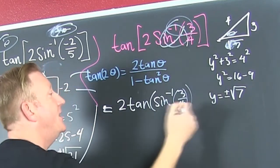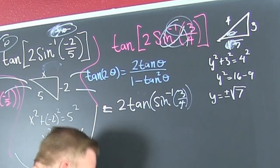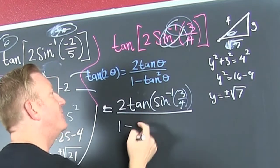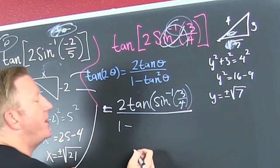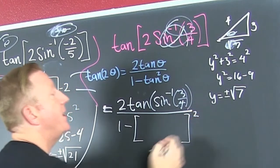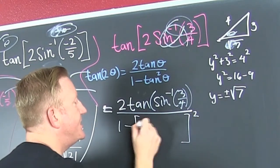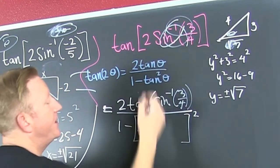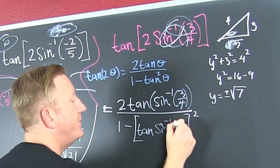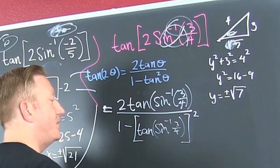Oh, boy. And then that's all divided by one minus, wait for it. Now, the tangent squared is really the tangent squared. I hope I can fit it. This is the tangent of, what's my theta? That's the sine inverse of three-fourths.